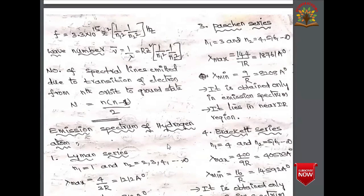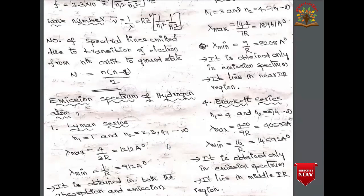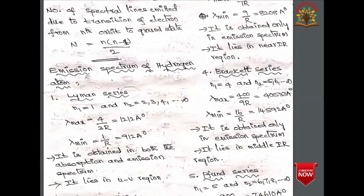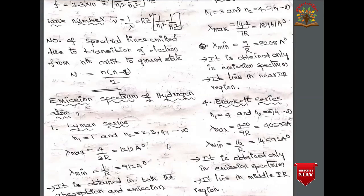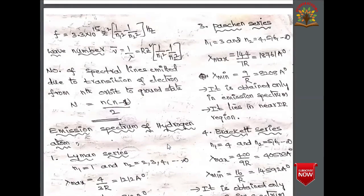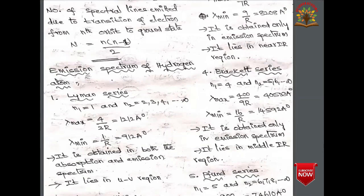The Paschen series is obtained when n₁ = 3 and n₂ = 4, 5, 6, ... ∞. The maximum wavelength is due to the transition from the fourth to the third orbit, given by 144/(7R) = 18761 Å, and the minimum wavelength is 9/R = 8208 Å. The Paschen series is obtained only in the emission spectrum and lies in the near infrared region.